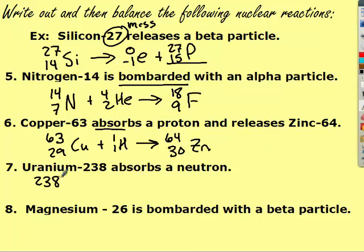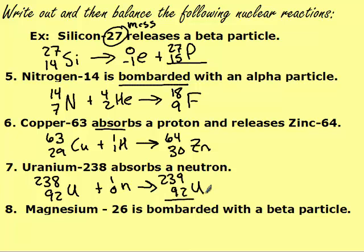So that one's done. Uranium-238, 92, absorbs a neutron. And finally, that turns into... Make sure that when you're solving these, that you're putting the H or the N and the correct numbers.